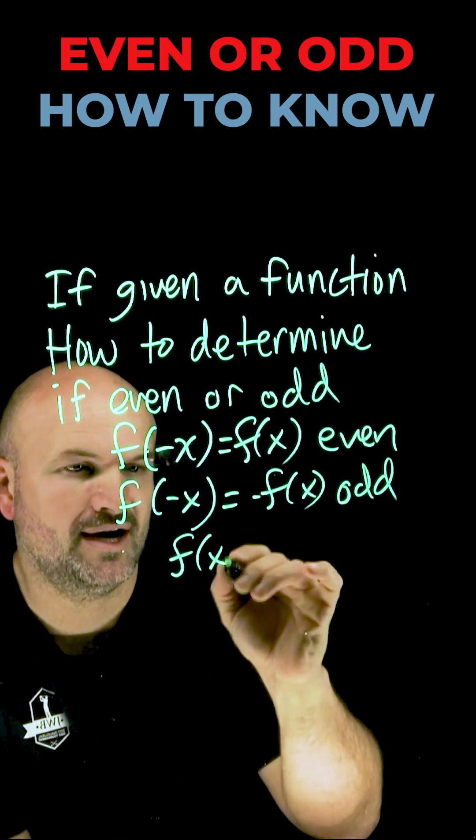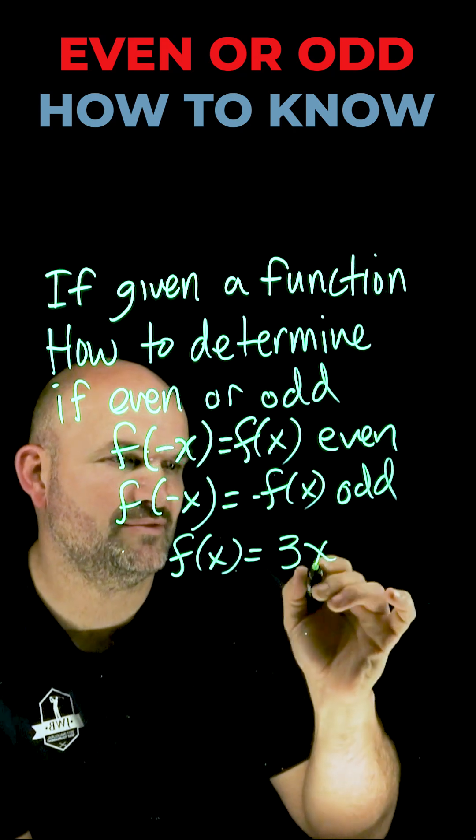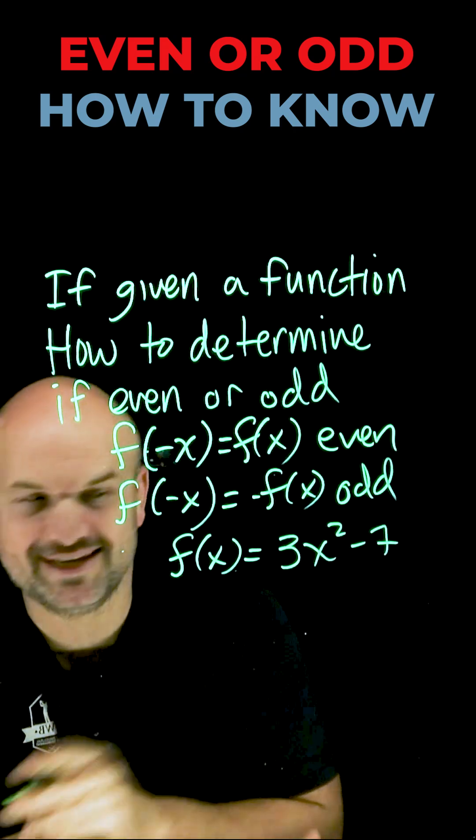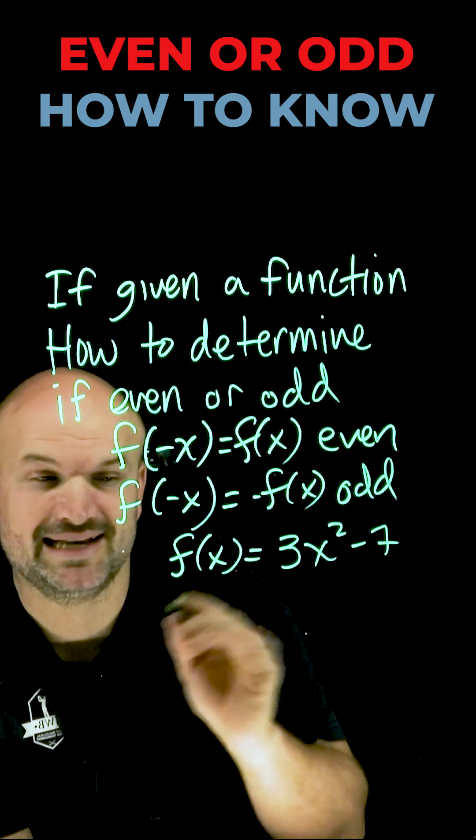So let's say I have the function f(x) equals 3x² minus 7. Don't make any assumptions here. What we want to do is plug in negative x.